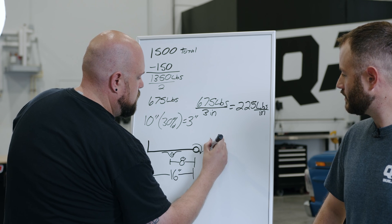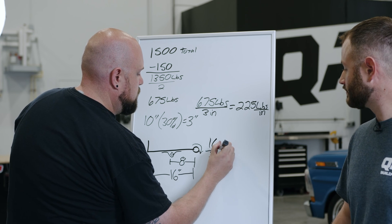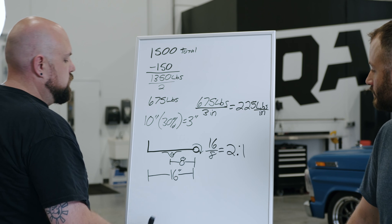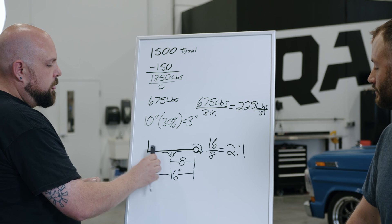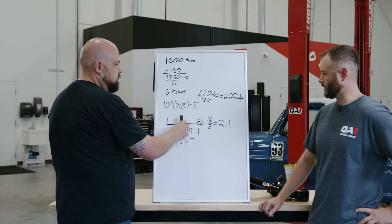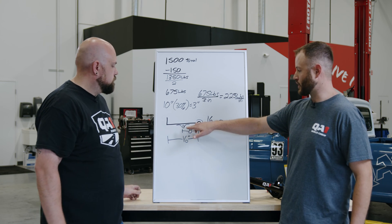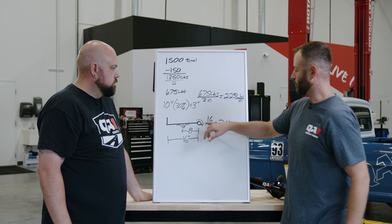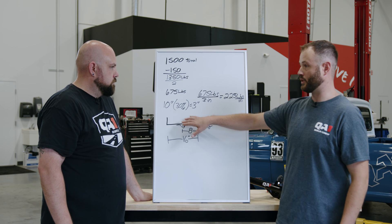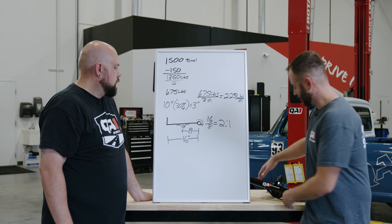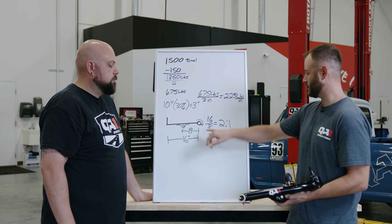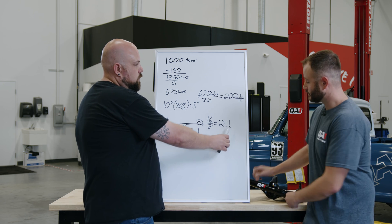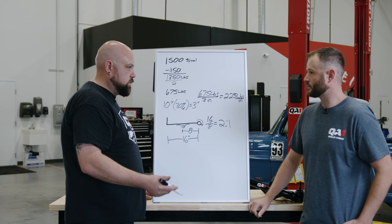Let's assume we have a 16-inch control arm from pivot to ball joint, and the shock mount is right in the middle at eight inches. So we take 16 divided by 8, which equals 2 — and that is a motion ratio of two to one. That means we have two units of measurement from pivot to ball joint versus one unit from pivot to shock mount. Note that we always measure from the pivot point to the shock mount, not from the ball joint to the shock mount.